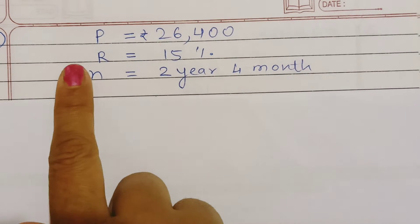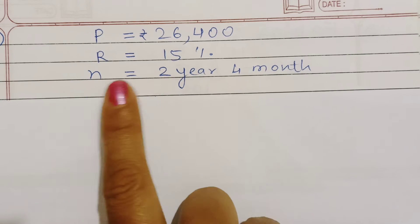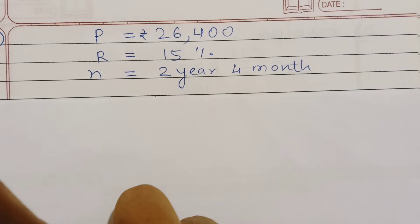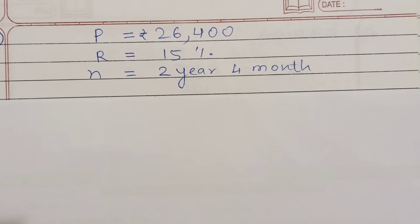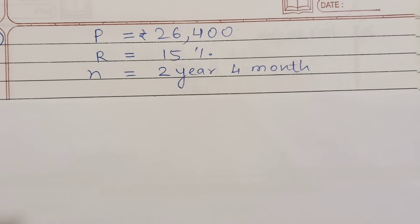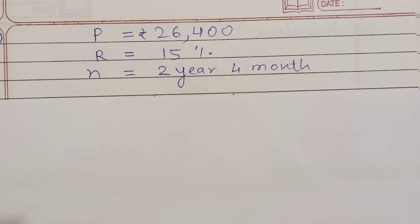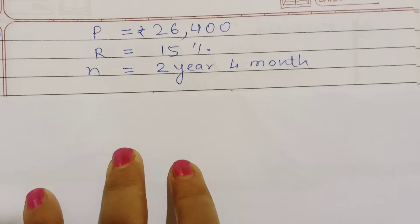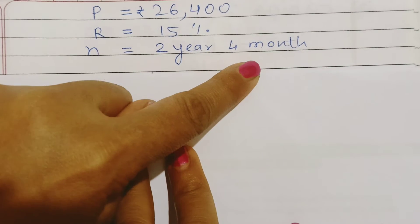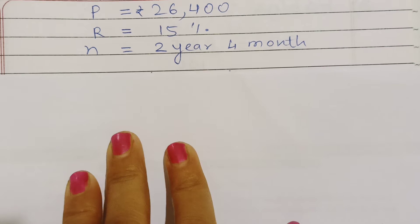Principal amount दिया हुआ है, rate of interest दिया है, time दिया है और compounded annually दिया है। इन दो words का ज़रूर ध्यान रखेगा — compounded annually। अभी इसमें annually बोला है तो हम annually solve करते हैं। 2 years 4 months का है, तो पहले हम 2 years का amount find out करेंगे।